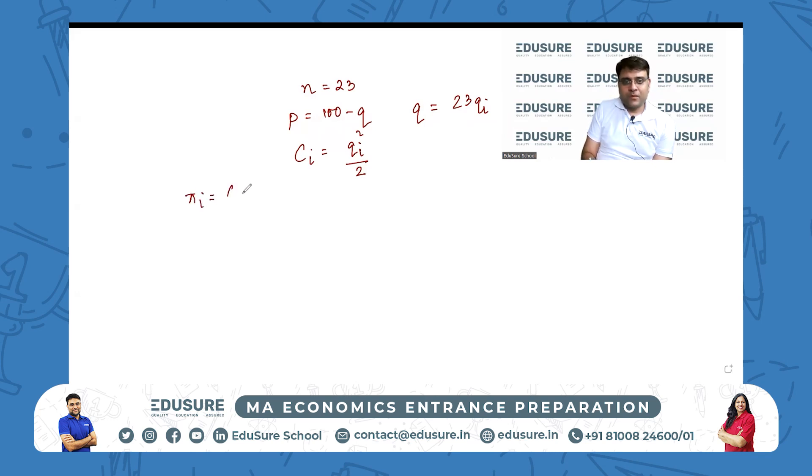Just by looking at profit of i: (100 - summation j not equal to i qj - qi) times qi - qi squared by 2. Differentiate: 100 - summation j not equal to i qj - 2qi - qi = 0. Now this is the first order condition from the profit equation for every ith firm.